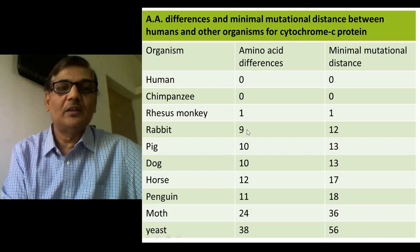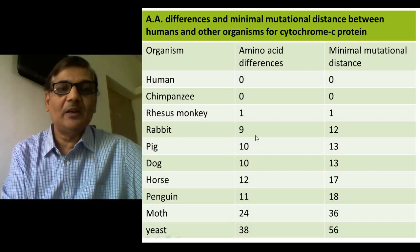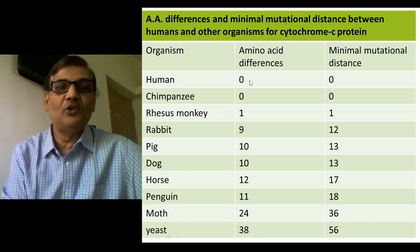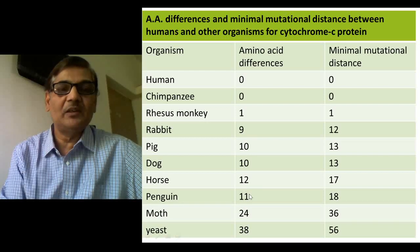If you consider the cytochrome C protein amino acid sequence of rabbit, you find 9 amino acid differences. Pig shows 10, dog 10, horse 12. On the basis of amino acid variation, you can get an idea of which organisms are closer to humans. Horses have 12 amino acid differences. Penguin, although it is a bird that has independently evolved getting separated from mammals, has 11 variations.